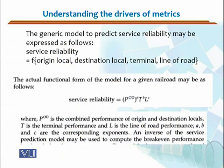For example, the generic model to predict service reliability may be expressed as follows. This is not a simple metric — we have actually modeled the situation. We have modeled the service reliability. Service reliability would be a function of the origin local, destination, which is also local, the terminal, and the line of road. If we want to devise a function which actually provides us the service reliability in this form, the actual functional form of the model for a given railroad may be expressed as follows. Here we are not using a metric, but instead we are using the driver for some performance — that is, a model.